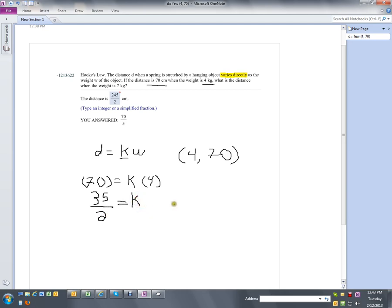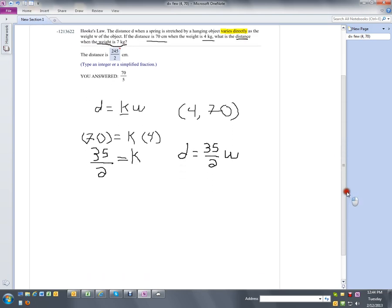Now that I have k, I've got the full formula. Distance equals k times w, so distance equals 35 over 2 times w. Now that I have the formula, I can use it. The question then asks us to calculate the distance when the weight is 7 kilograms. So I know the weight, I'm looking for the distance. I'm going to plug it into my formula.